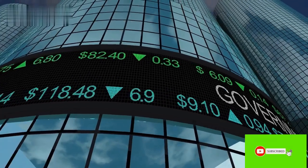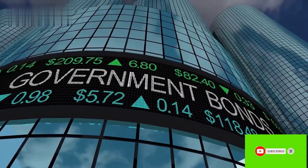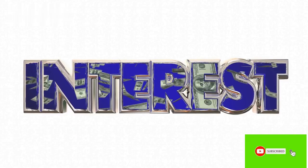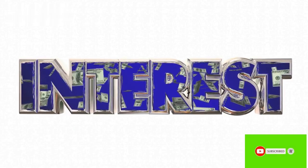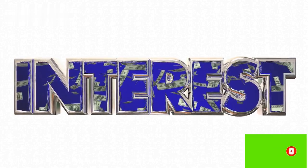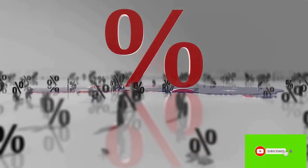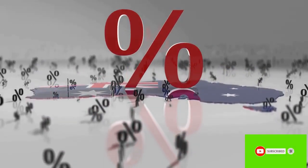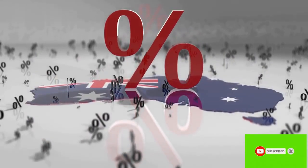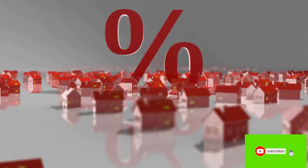Bonds are essentially loans that you make to a government or corporation. When you buy a bond, you're lending money to the issuer, and they agree to pay you back with interest over a set period of time. Bonds are generally considered a lower-risk investment than stocks, as their value tends to be more stable. However, they also offer lower returns.